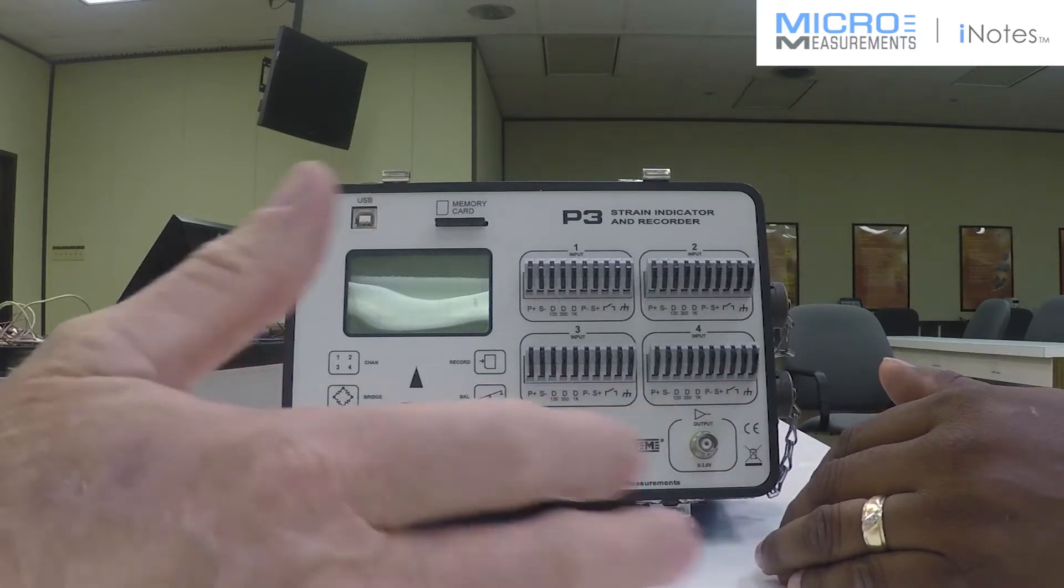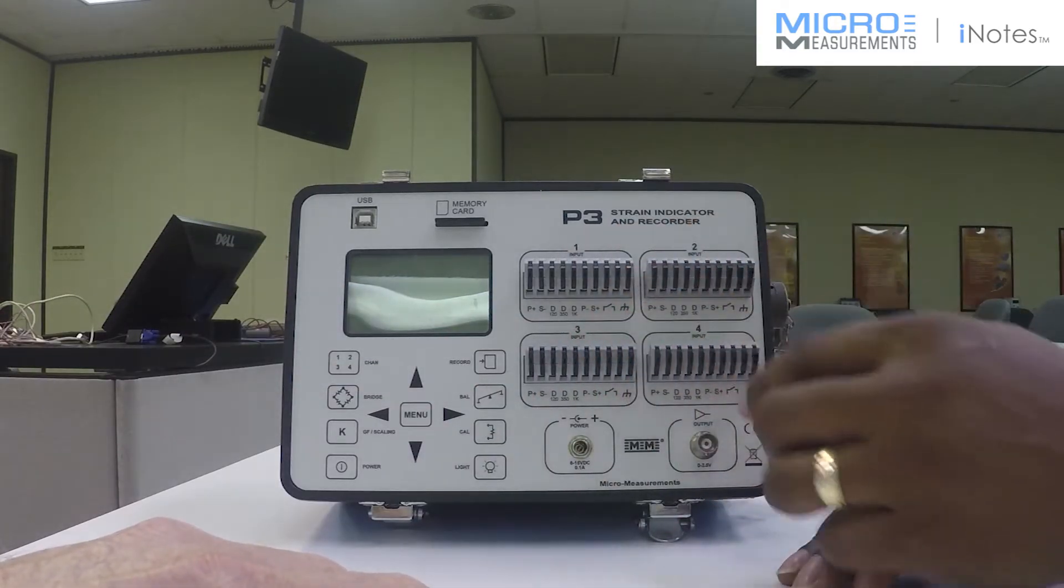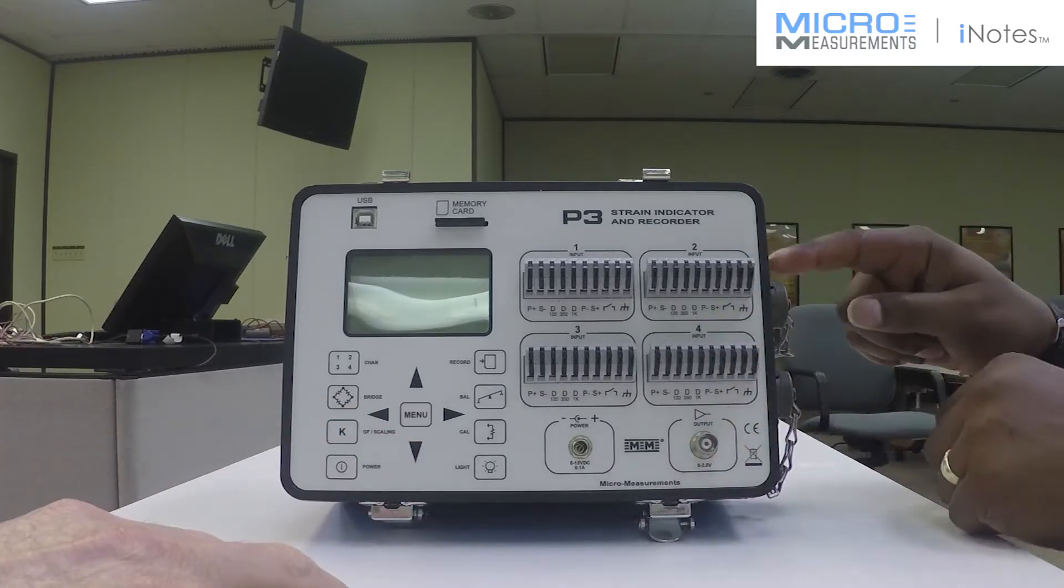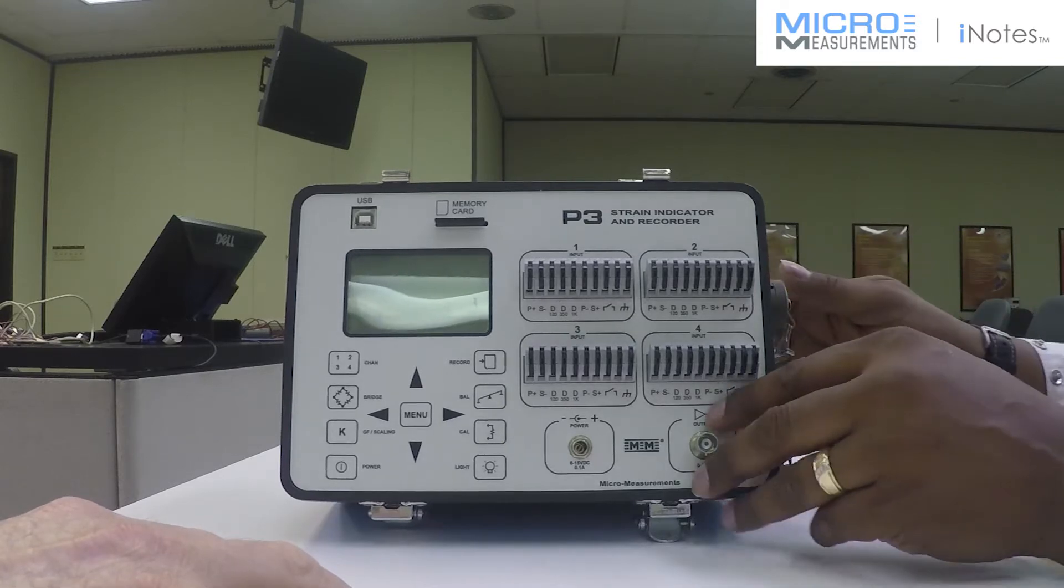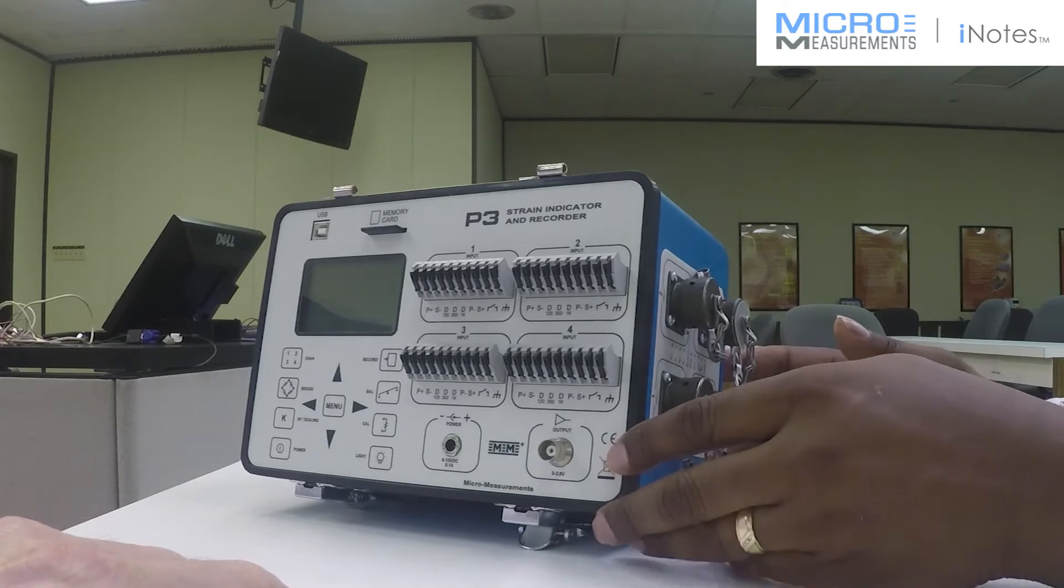Can you connect up transducers to this? Yes, you can. You can either use the standard connection if the transducers are wire-based, but if they have some type of Bendix connector or twist-lock connector, there are connections on the side of the unit here that will allow you to connect your transducers as well. I see, very good.